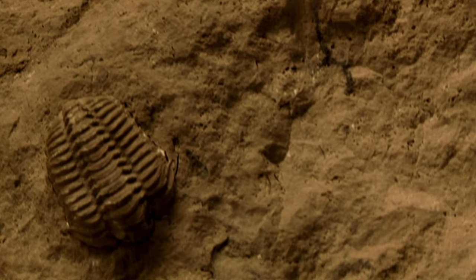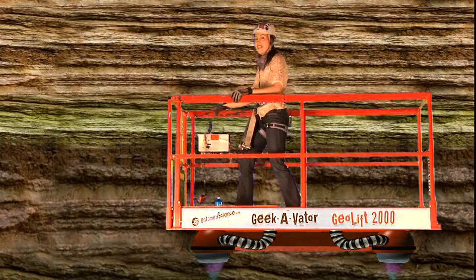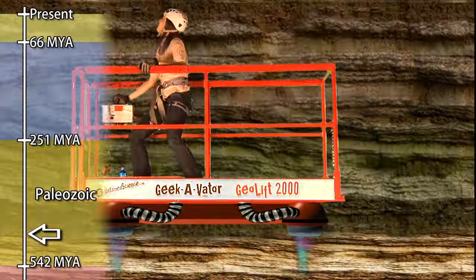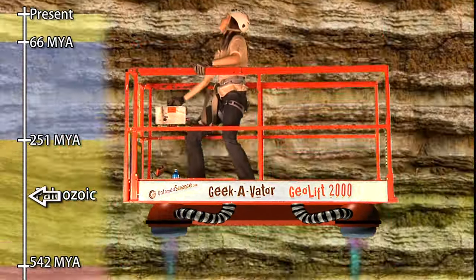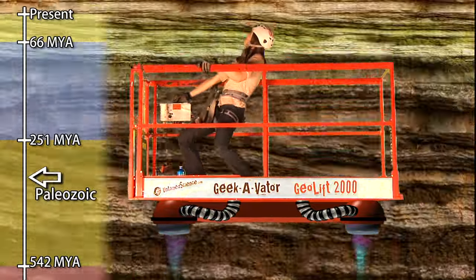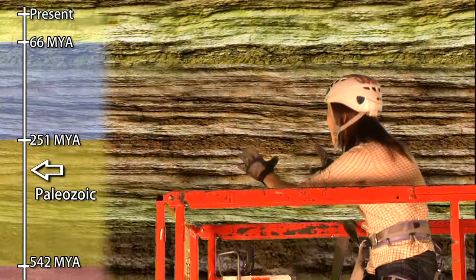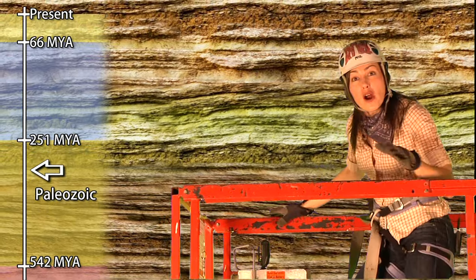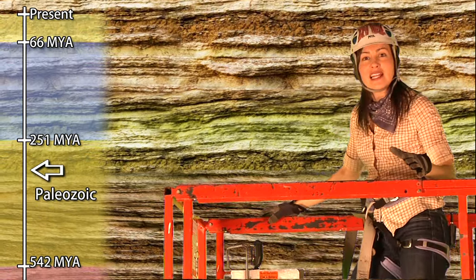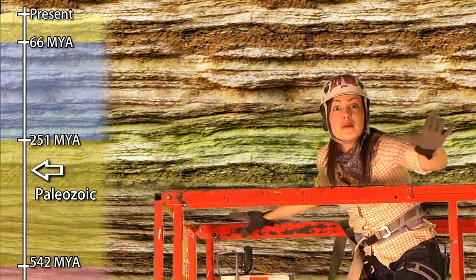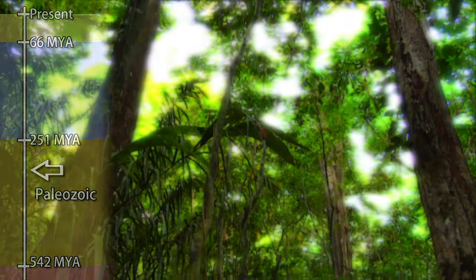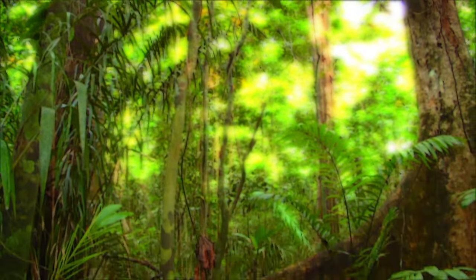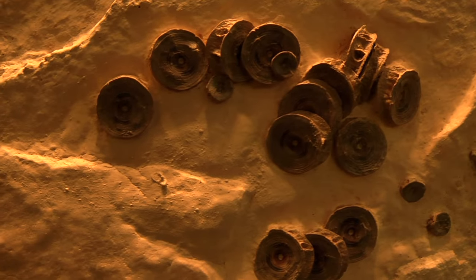Eventually insects started colonizing the land. Next stop: 350 million years ago, during the Carboniferous period of the Paleozoic. The first vertebrates already had a foothold on the land, and vast forests of primitive trees formed — that's one reason most of the world's coal was deposited during this period. Other cool stuff like crinoids lived then.